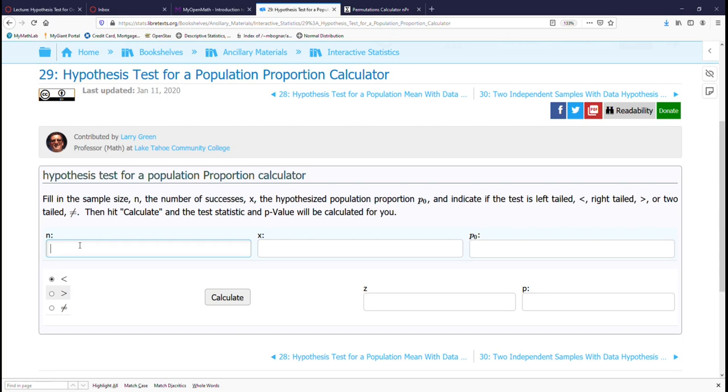The sample size is 1205. We know the number of successes is 656. Our population proportion is 0.5238. And our alternative hypothesis is less than, so select the less than symbol and calculate. Here is our z statistic, 1.432. And our p-value is 0.934.